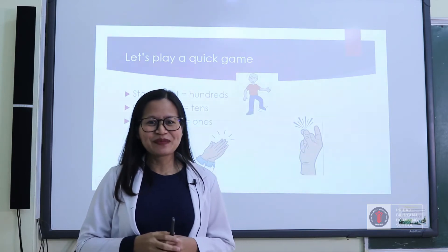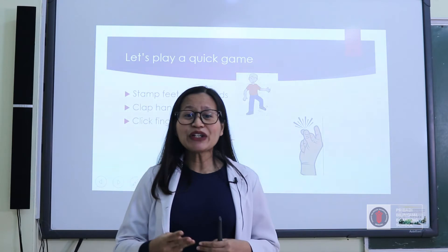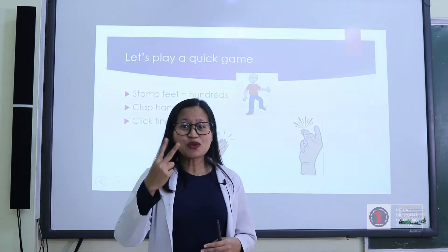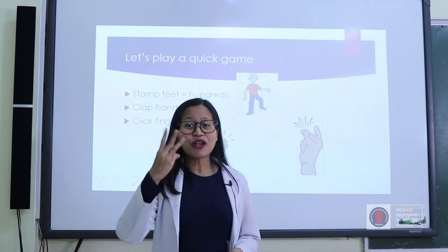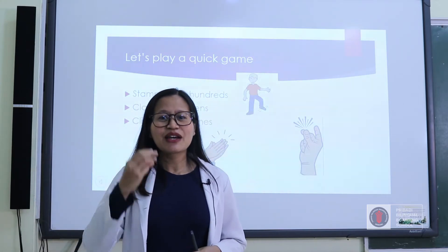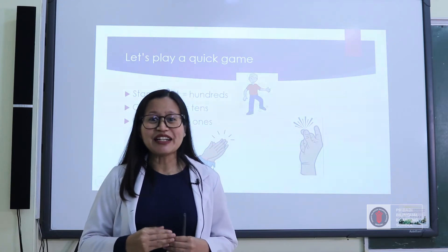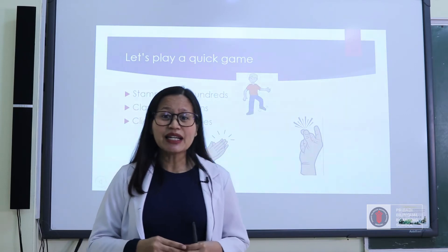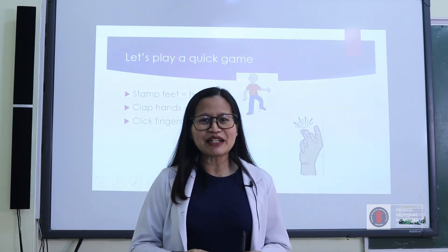What number is it? Correct! It's two hundred thirty-three. Because I stamp my feet twice, that means two hundred. I clap my hands three times, that means thirty. And I click my fingers three times, that means three. So the number is two hundred thirty-three. You may also play with your family members if you want to.